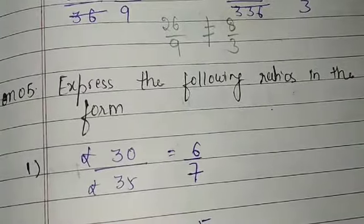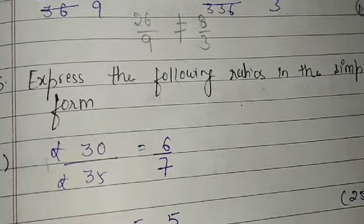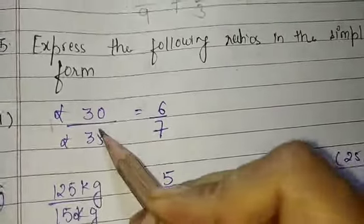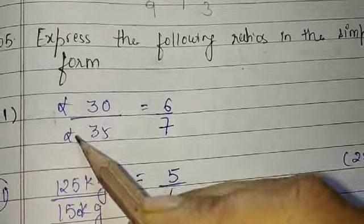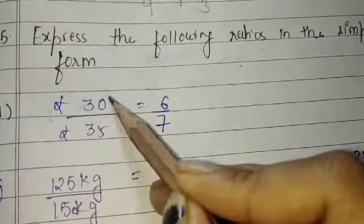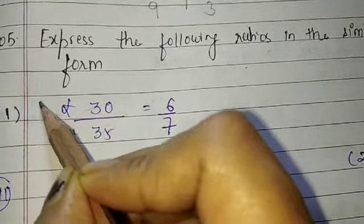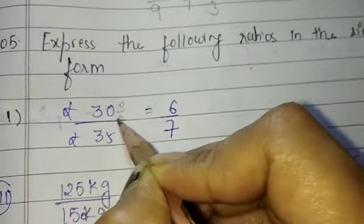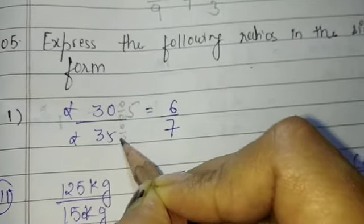Now question number 5 is, express the following ratio in the simplest form. 30 and 35. Here is rupees, here is rupees. Let's see who comes in which table. So 5, 6, 30 and 5, 7, 35.